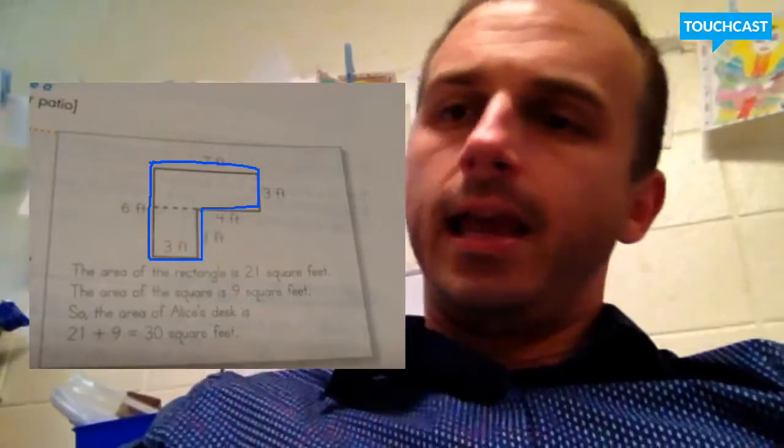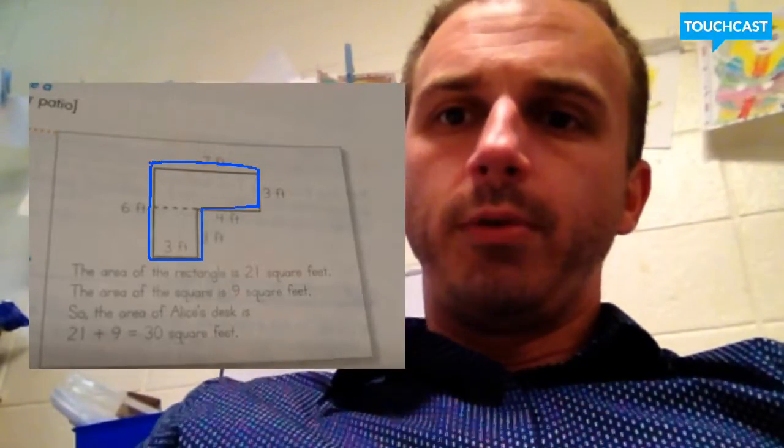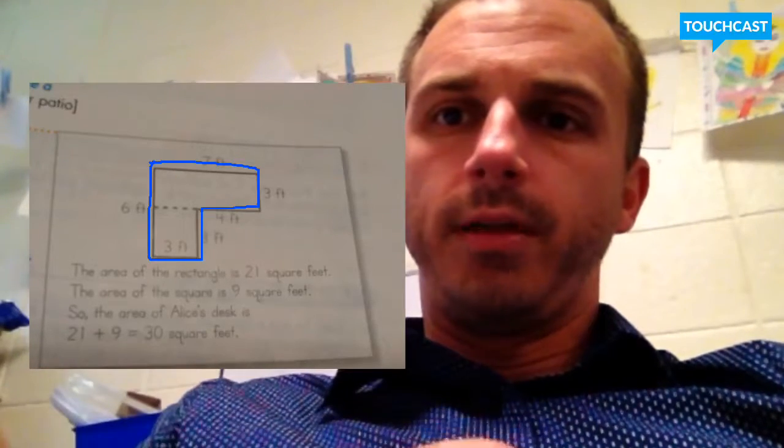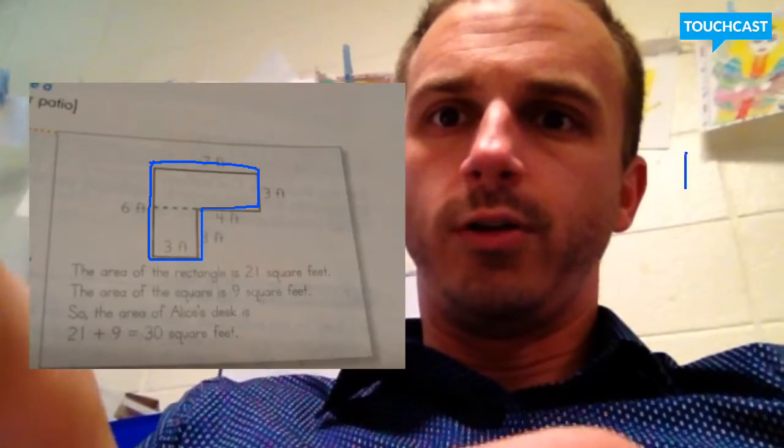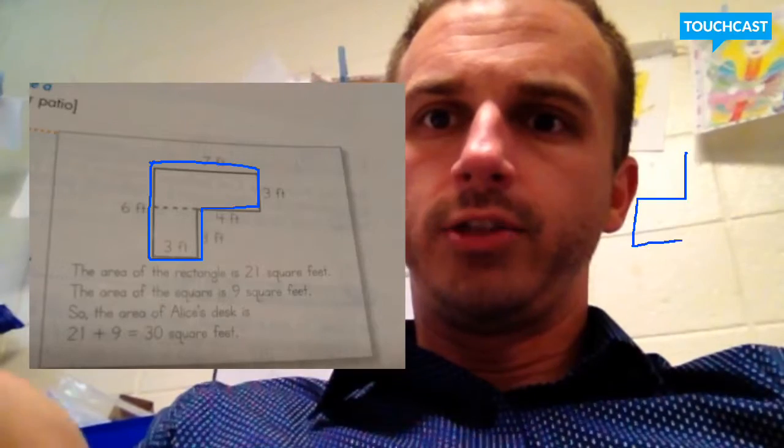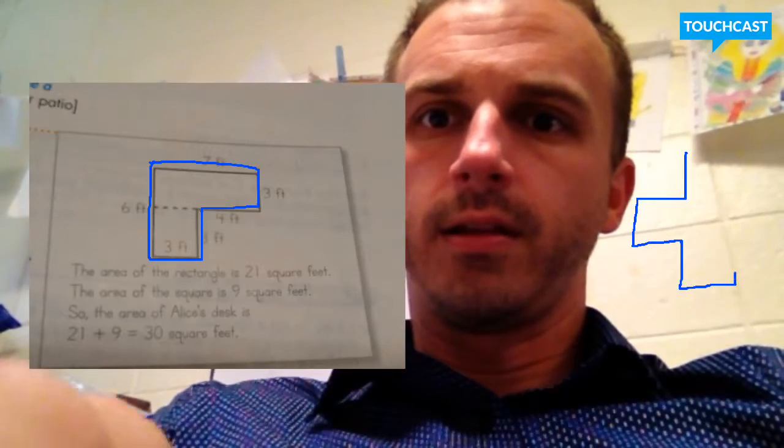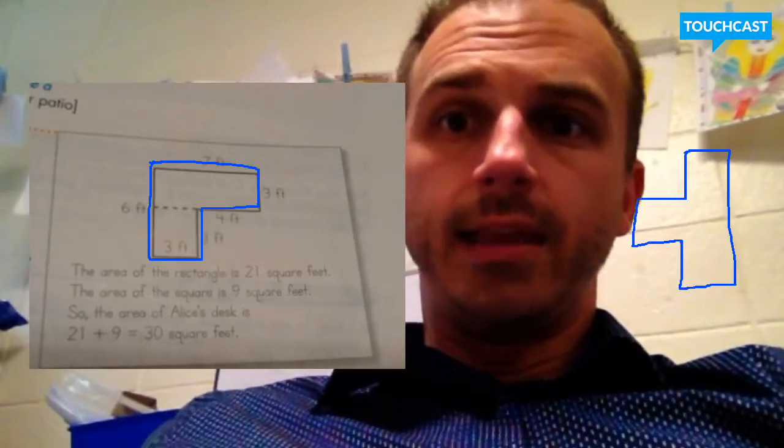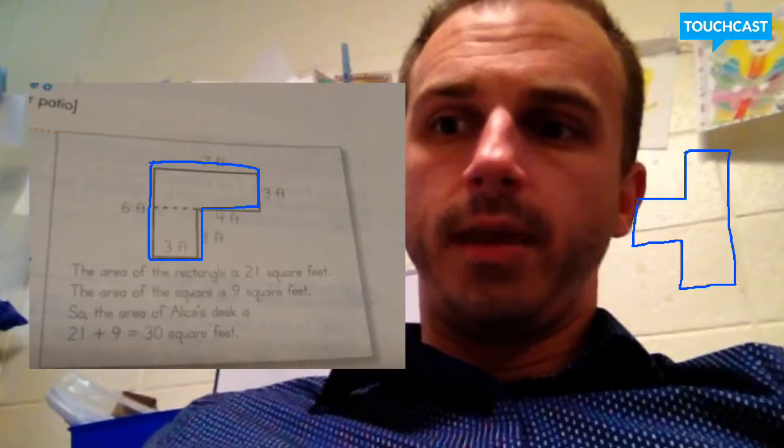And so let's say we were to have another shape. Let's say we were to have a shape, and we'll draw it over here on this wall area. Let's say I would have a shape like this. Can you see the two shapes that I make?